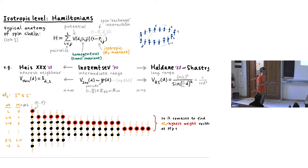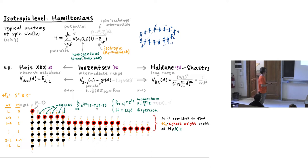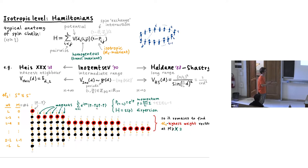By SL(2) symmetry it suffices to find the highest-weight vectors — the red dots. With zero down spins, we know the vector immediately (all spins up), giving the entire L+1-dimensional irreducible. Now using translational invariance fixes these red dots: they are magnons, with wave function given by a plane wave with momentum p, quantized because we're on the circle. These are eigenvectors of the Hamiltonian, and their energy as a function of momentum gives the dispersion relation.